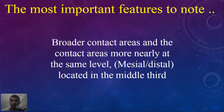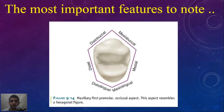Now about what we mentioned earlier regarding the contact area, not the contact point: the maxillary first premolar has a broader contact area, and the mesial and distal contact areas are located at nearly the same level — in the middle third.